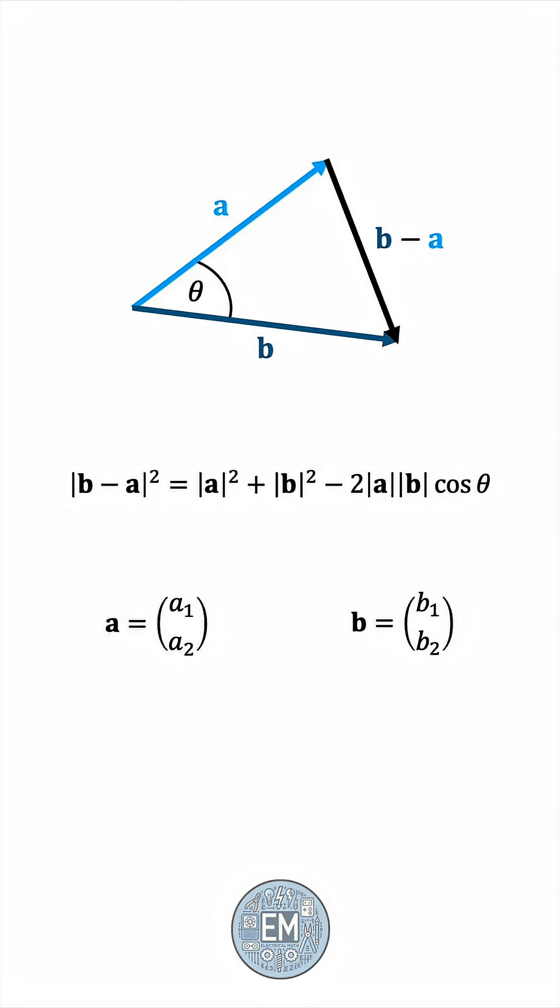b minus a is just the displacement vector between the two. Its components are b1 minus a1, b2 minus a2.